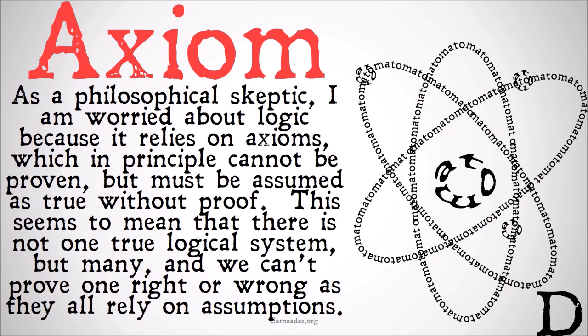As a philosophical skeptic, I'm worried about logic because it relies on axioms which in principle cannot be proven but must be assumed as true without proof. This seems to mean there is not one true logical system, but many, and we can't prove one right or wrong since they all rely on assumptions. When you look into non-classical logics, you see they can solve problems that classical logic can't, and they take different axioms as their basic assumptions — so things you thought might be easy to assume maybe aren't.